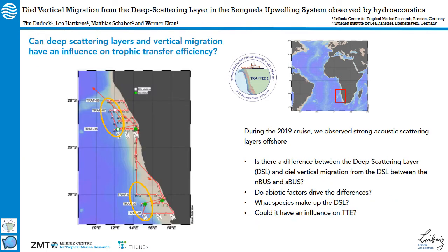During our cruise in 2019 we observed strong acoustic scattering layers offshore, and despite this not being the center of our research, we were wondering whether these deep scattering layers and the intense diel vertical migration that we observed are actually different between the northern and southern subsystems, which abiotic factors might drive this, what species make up these layers, and could this actually have an influence on the trophic transfer efficiency. This is the focus of the presentation today.